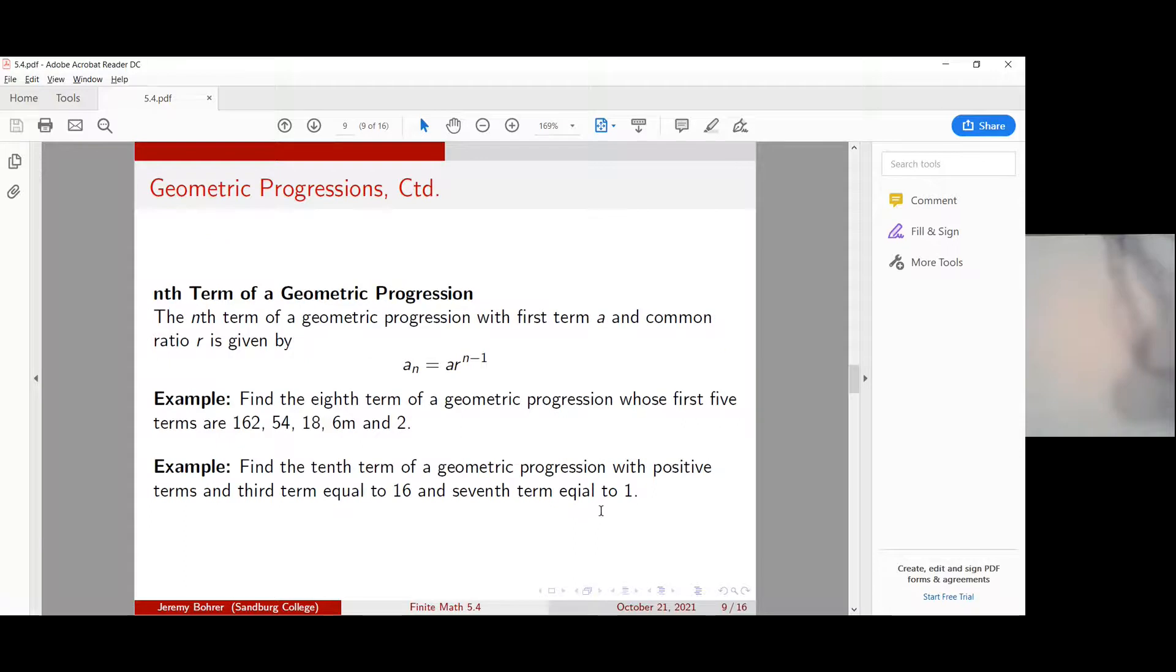So our first problem is to find the eighth term of a geometric progression whose first five terms are 162, 54, 18, 6, and 2.